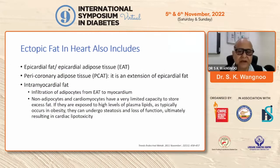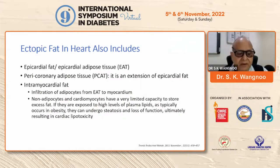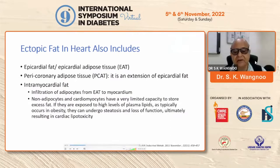The ectopic fat in the heart also includes epicardial adipose tissue, pericoronary adipose tissue — which is an extension of the epicardial fat — and intramyocardial fat, which is the infiltration of adipocytes from the epicardial adipose tissue into the myocardium. Non-adipocytes and cardiomyocytes have a very limited capacity to store excess fat. If they are exposed to high levels of plasma lipids, as typically occurs in obesity, they can undergo steatosis and loss of function, ultimately resulting in cardiac lipotoxicity — what we call cardiac steatosis.